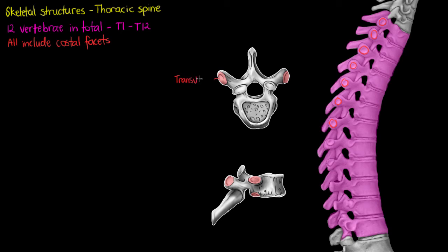Transverse being on the side. We also have a superior and an inferior costal facet. The superior and inferior costal facets are going to interact with the heads of the ribs, while the transverse facets are going to interact with the tubercles of the ribs.